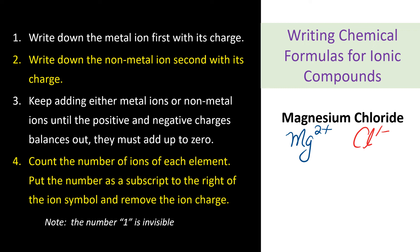Third, you have to keep adding either metal ion or non-metal ion until the positive and negatives cancel each other out. The total charge of a compound must add up to zero. So always start with the lower charge. Chlorine has 1-, so we're going to add one more chlorine. Now 1- and 1- gives us 2-. So 2+ on the magnesium and chlorine 2- cancel each other out.